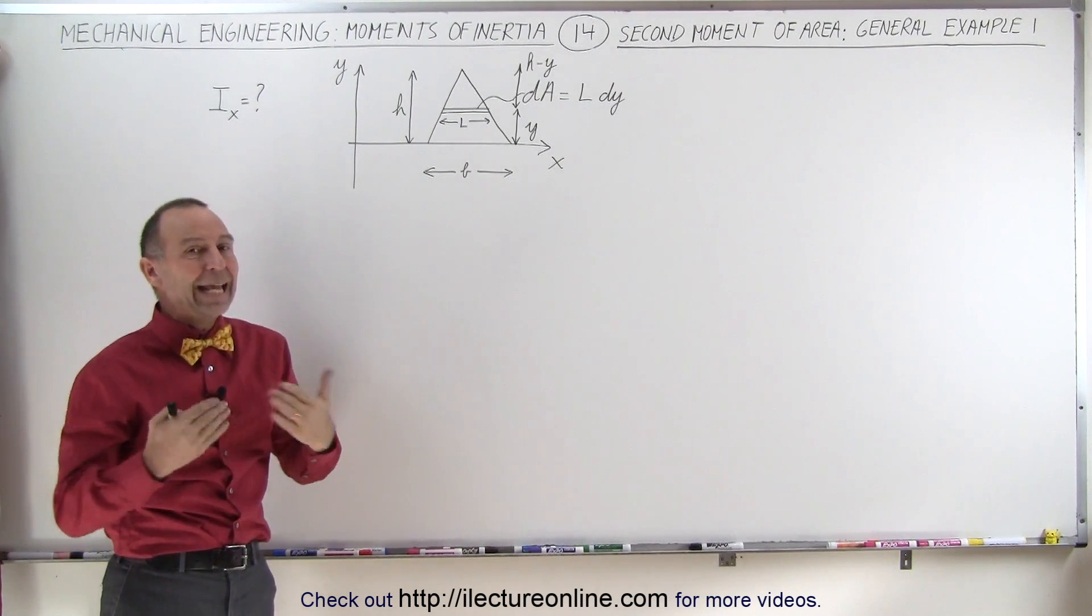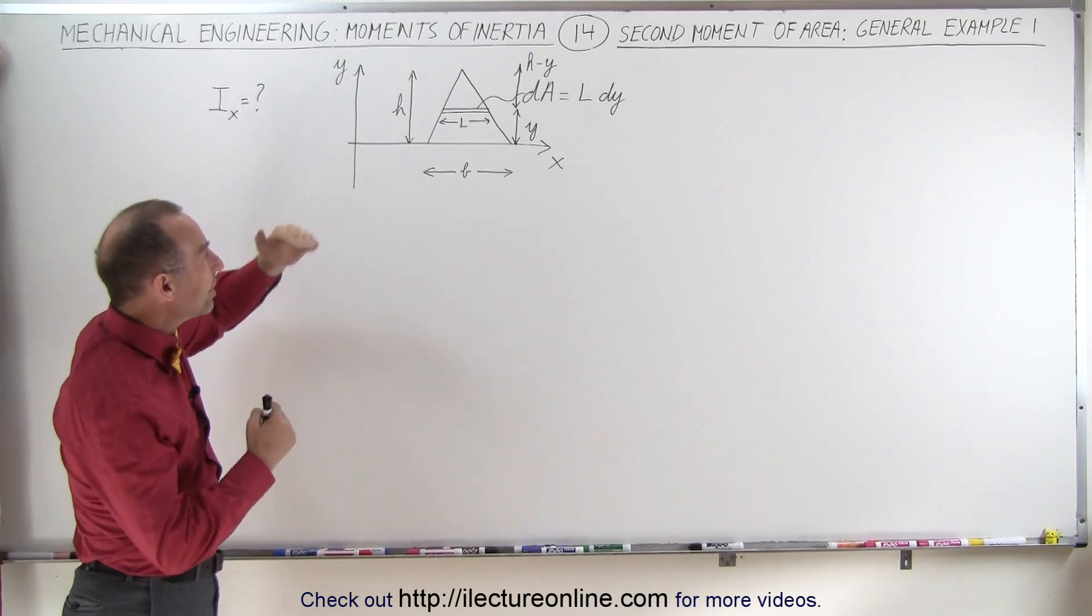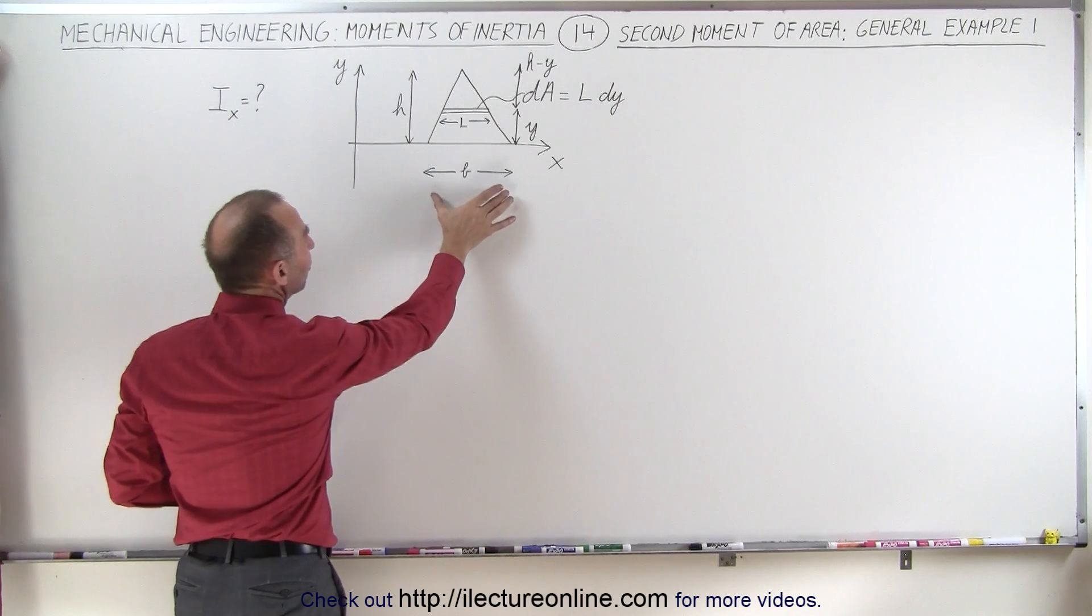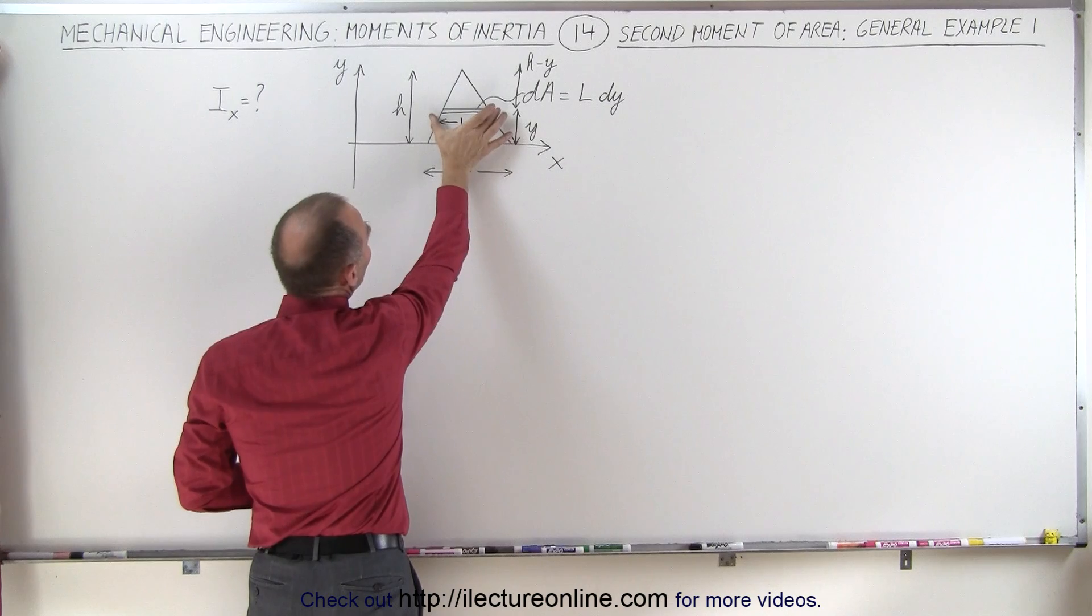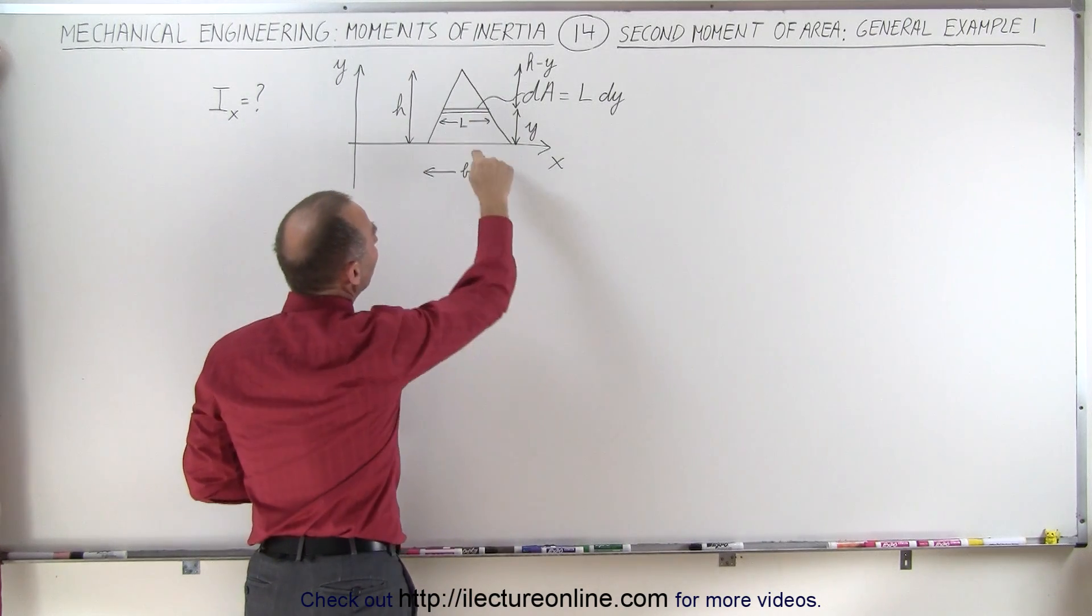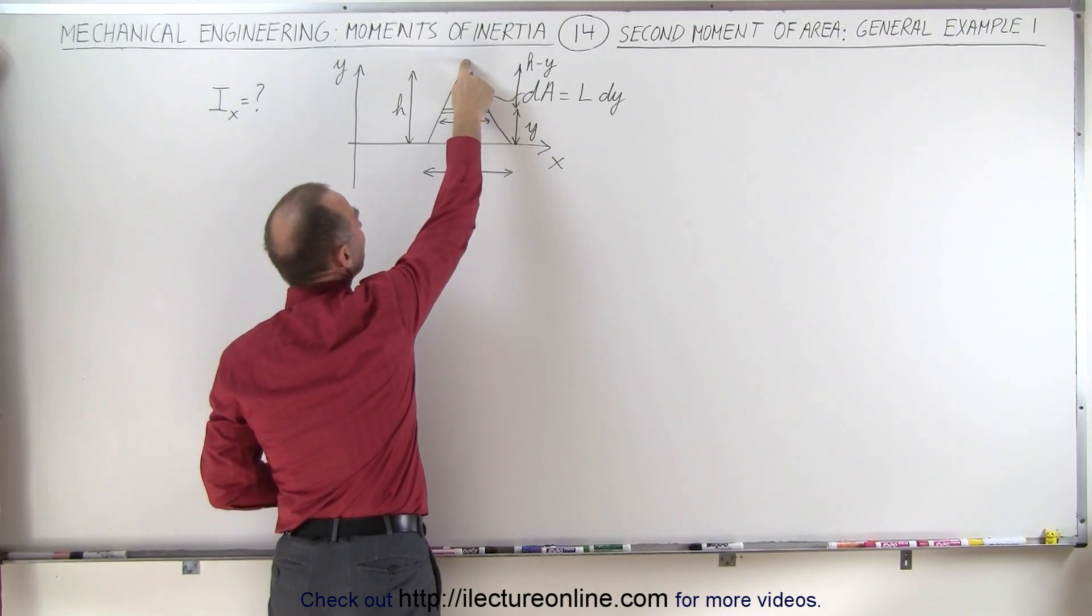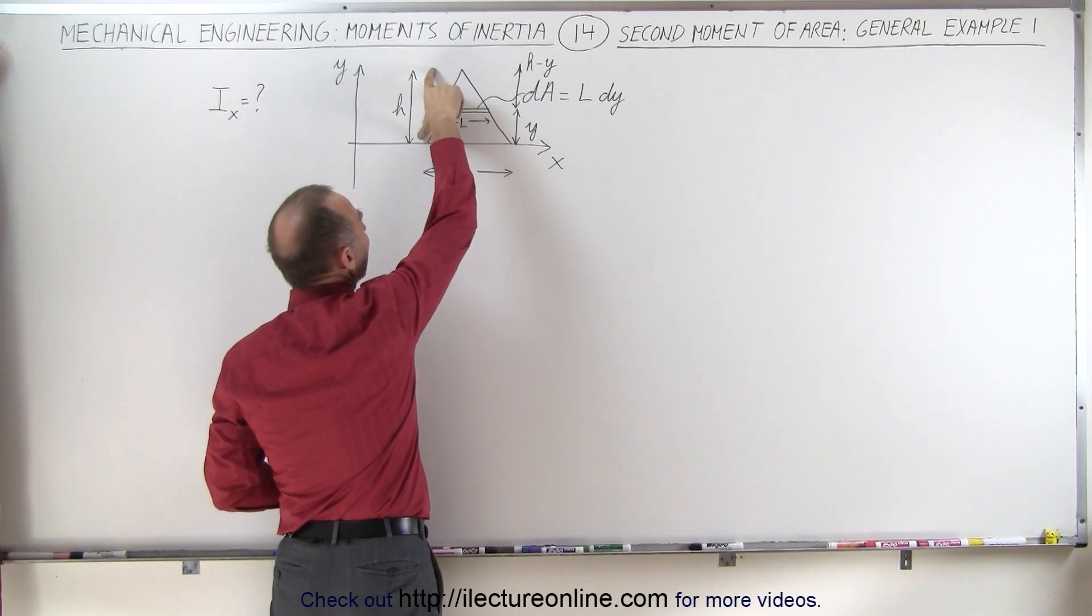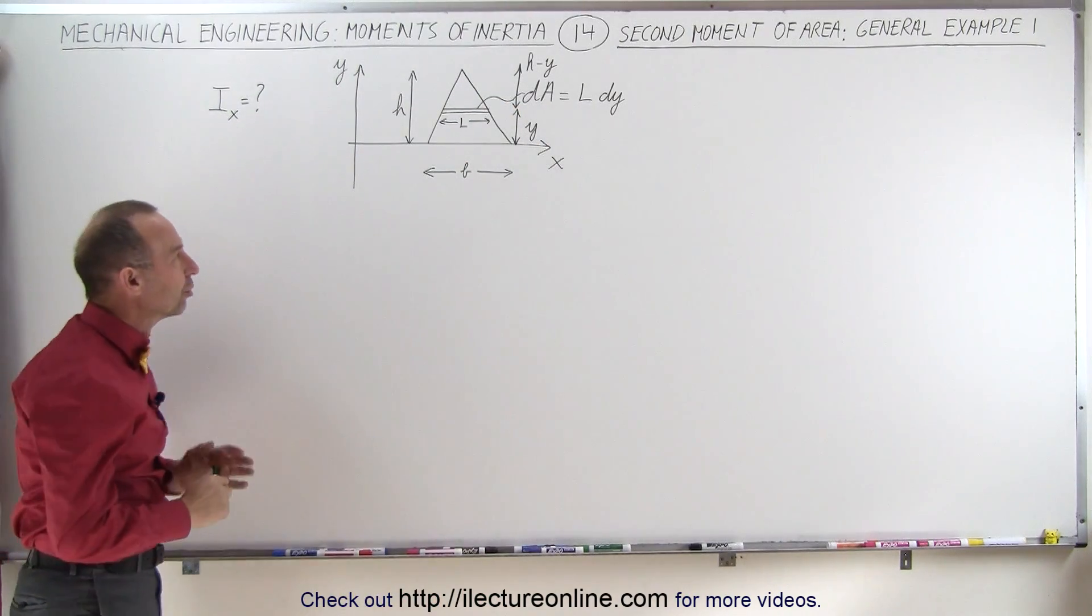So the triangle can be in any shape. Notice that the height of the triangle is h, and the width of the base is b. Now, we've drawn an area element here, dA, which has length L and height dy. The distance to the area element is y, and the distance from the top of the triangle to the area element, it will be h minus y. We're going to need that information in just a moment.